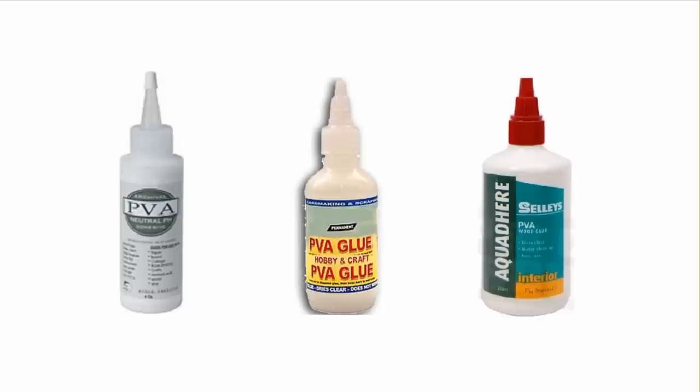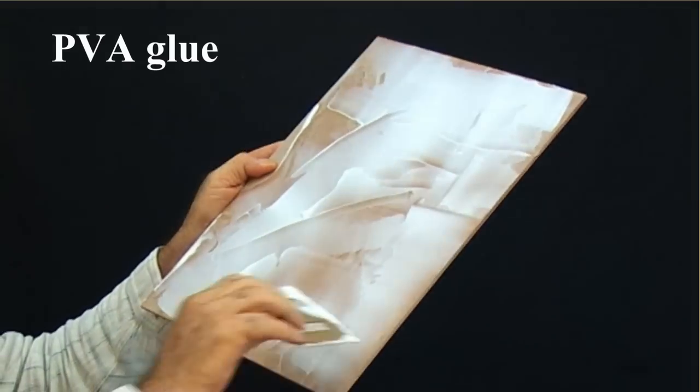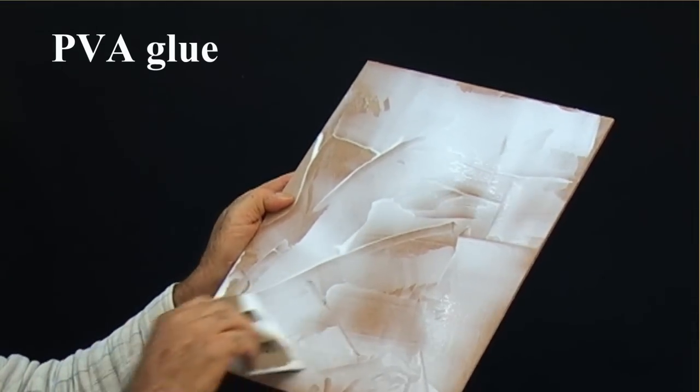This is the white PVA glue, a very common glue often used for woodwork. Give the board a thick coat of glue by spreading it with a spreader.